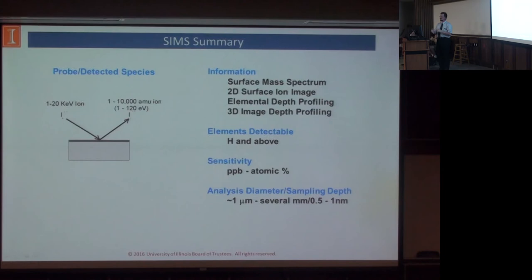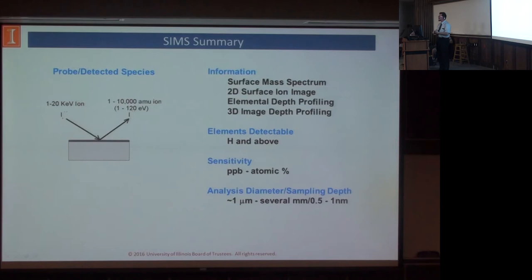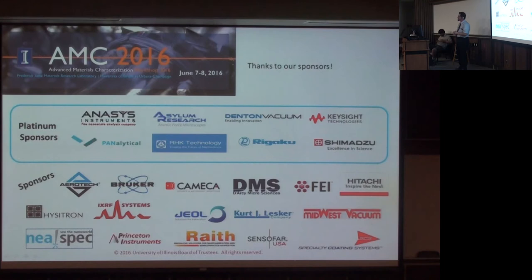To summarize the SIMS technique: we use ions in about 1 to 20 kiloelectron volts coming in and measure the masses coming out — up to 10,000 AMU in specialized circumstances. The types of information we can get include surface mass spectra, 2D surface ion images, elemental depth profiling, and 3D image depth profiling. We can detect all the way down to hydrogen. Our sensitivity can be from parts per billion up to atomic percent. Sampling depth tends to be in the nanometer range.